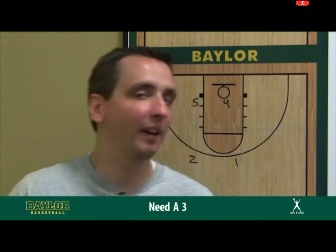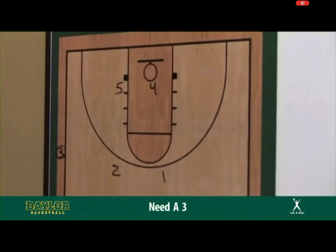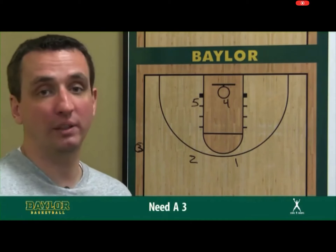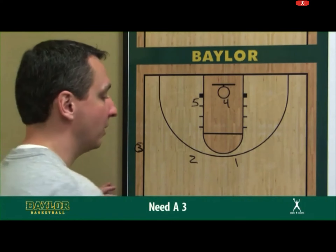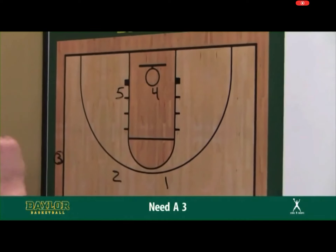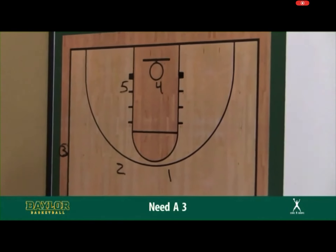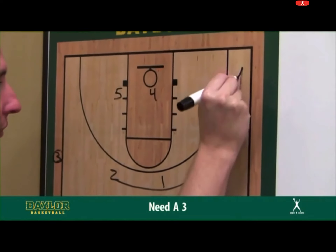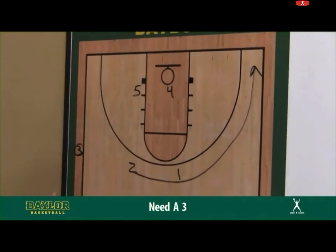Our final sideline out-of-bounds scenario is mid-game when we just need a three regardless of time — we're looking to get a three-point play. We have the five and the four. The four will start heading to the rim. The two and the one are starting out. The two is going to clear out completely — this is all decoy action — and we want him as far out of the play as possible.